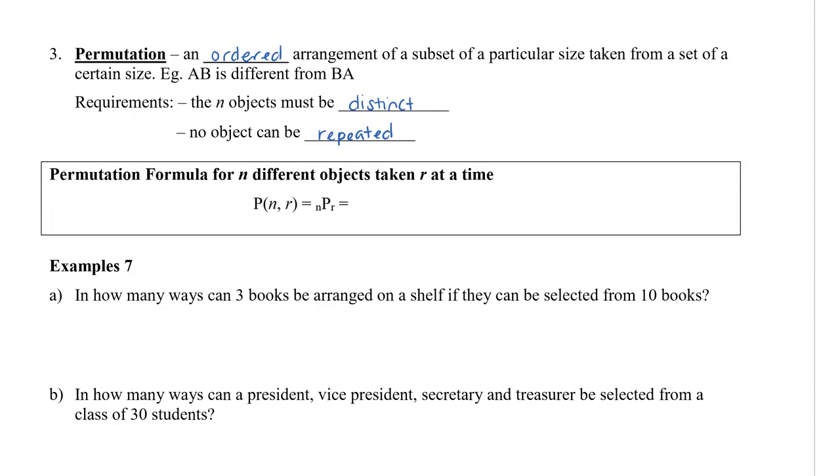Based on what we already know with the Fundamental Counting Principle, we have three slots. So we have ten ways to choose the first book, times nine ways to choose the second book, and then eight ways to choose the third book. If I want to write this in factorial notation, this would be ten times nine times eight times seven factorial divided by seven factorial. So the seven factorials would cancel, which is ten factorial in my numerator divided by seven factorial.